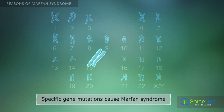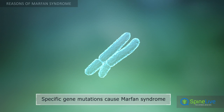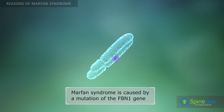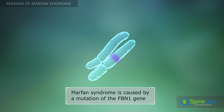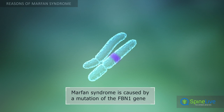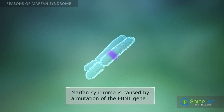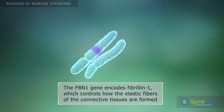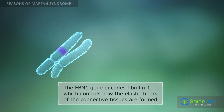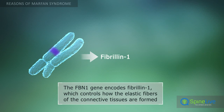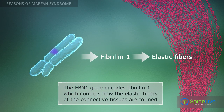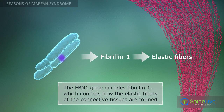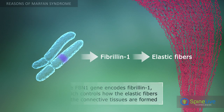Mutations on chromosome 15 in the FBN1 gene cause Marfan syndrome. The FBN1 gene encodes Fibrillin-1, a protein that determines the formation of elastic fibers and, as a result, the connective tissues.